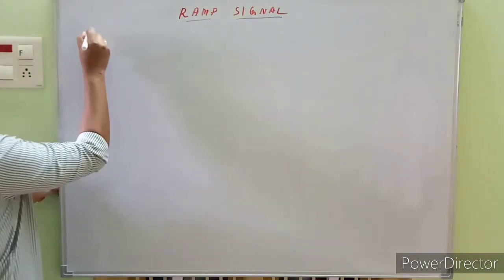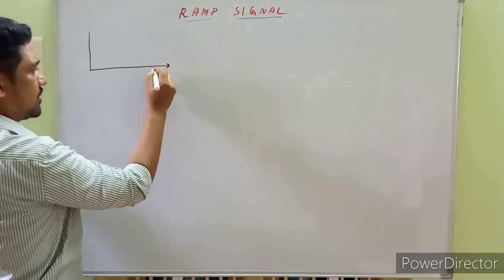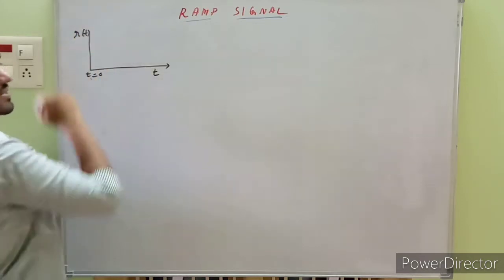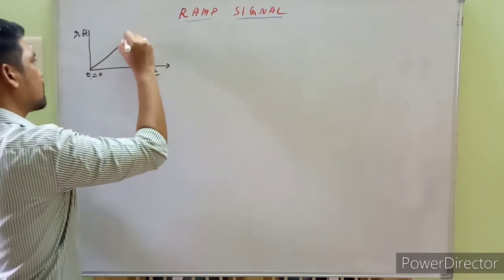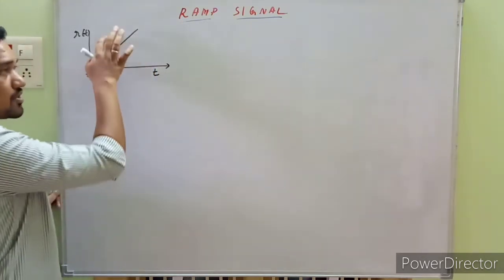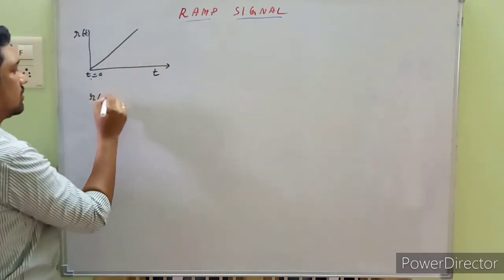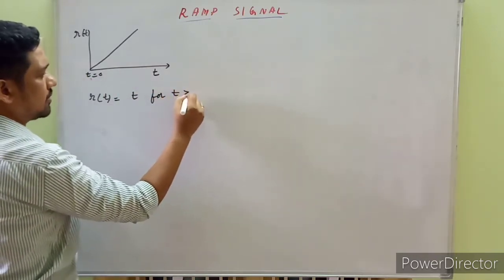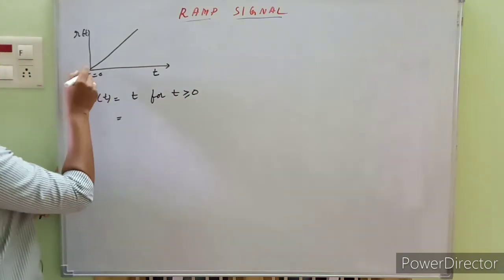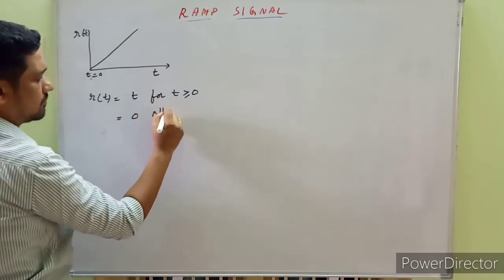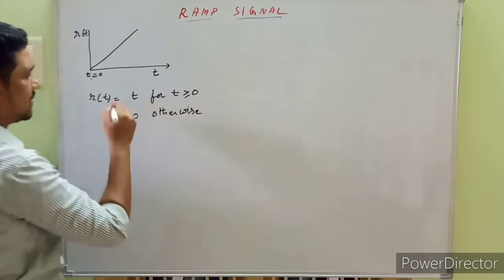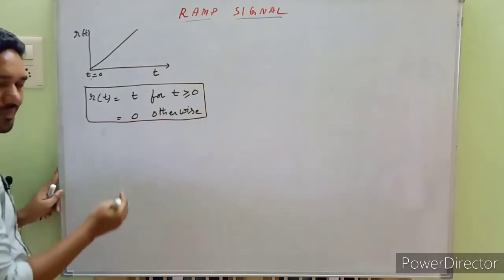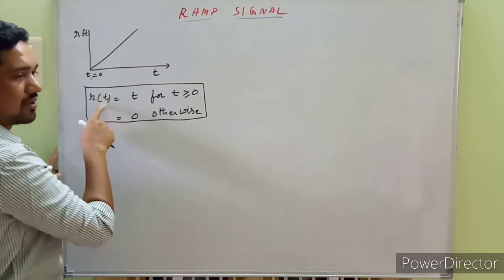This is how a ramp signal looks: on the horizontal axis we have the time period t, and on the vertical axis we have r(t). The amplitude goes on increasing. The mathematical representation of this ramp signal is: r(t) = t for t greater than or equal to zero, and zero otherwise.